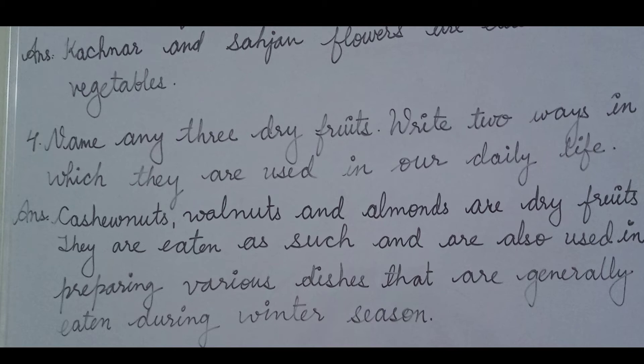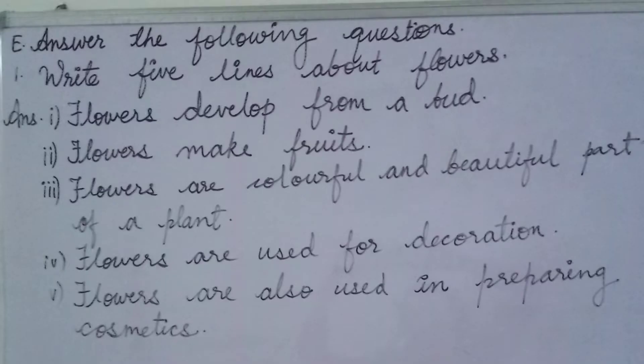Question E, answer the following questions. Number one: write five lines about flowers. First point: flowers develop from a bud. Second point: flowers make fruits — flowers produce the fruits of the plants.